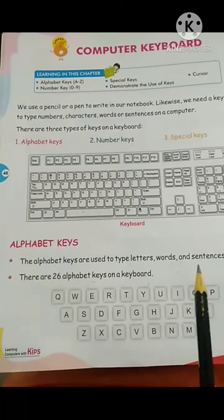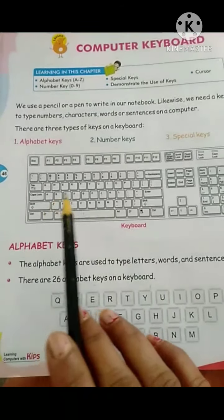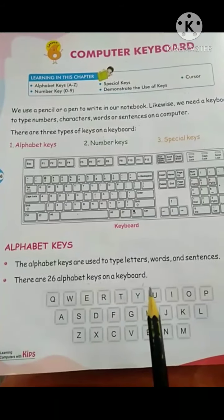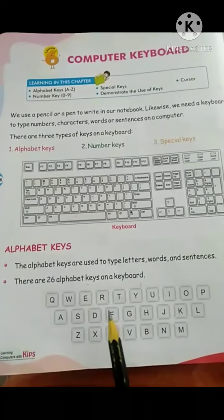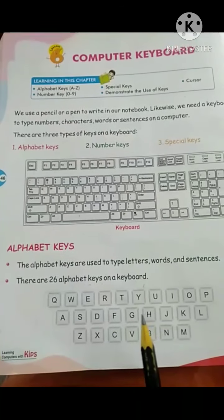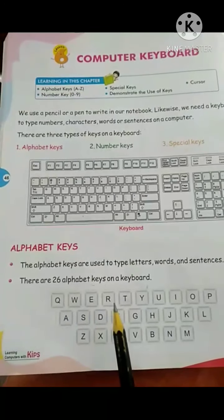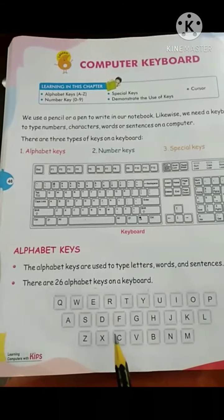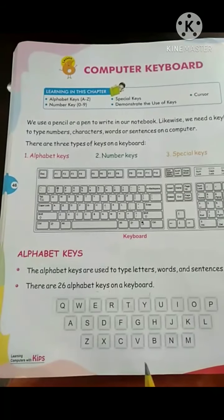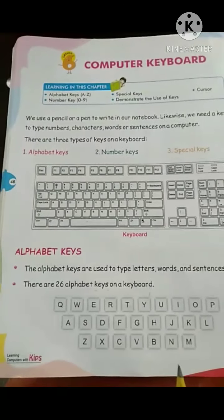Children, if you want to write any poem or any story, you can use alphabet keys. There are 26 alphabet keys on a keyboard, but they are not in alphabetical order. They are arranged in QWERTY layout: Q, W, E, R, T, Y — this way. So if you want to type any story or any poem, you can use alphabet keys.